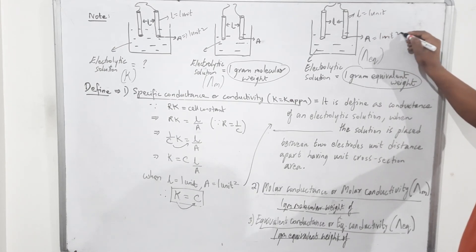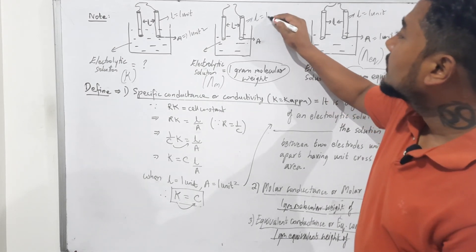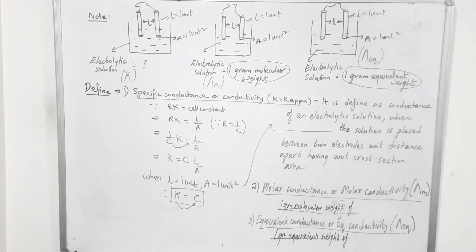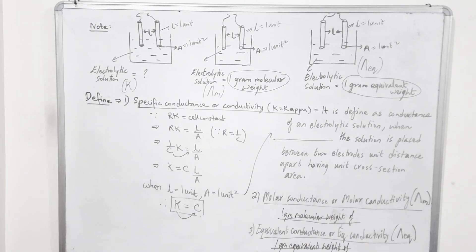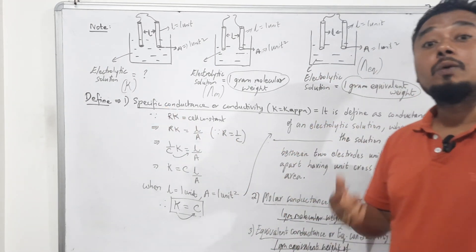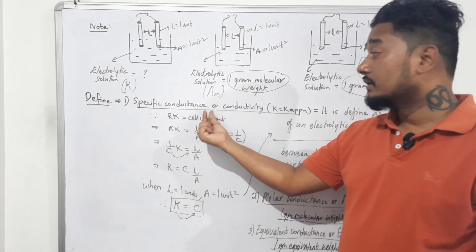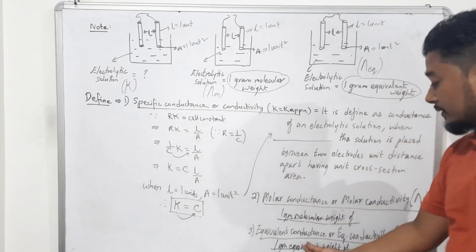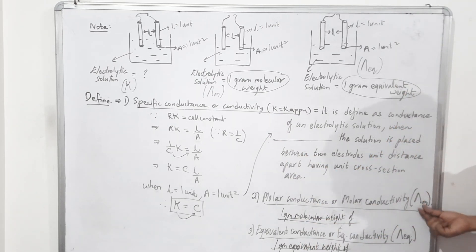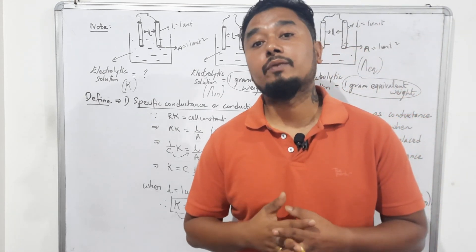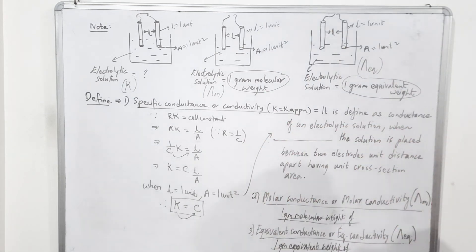Your job now is to revise. Take a screenshot or make notes, and repeat the video if needed. In our next class, we are going to see the relation between these three: the relation between specific conductance (κ) and molar conductance (Λm), between κ and equivalent conductance (Λeq), and between Λm and Λeq. From those relations we get formulas, and with those formulas we will solve numerical problems. Thank you very much — see you in my next class.